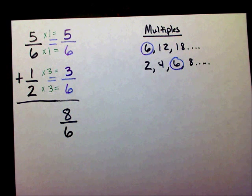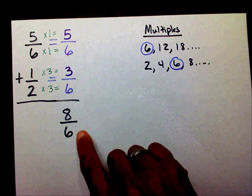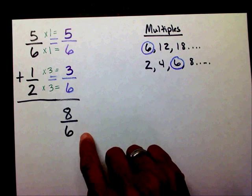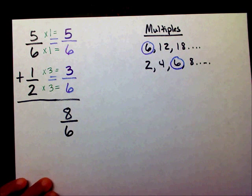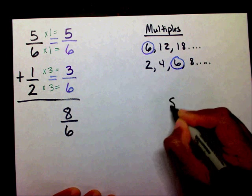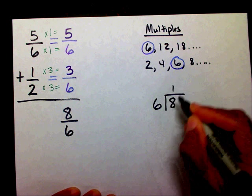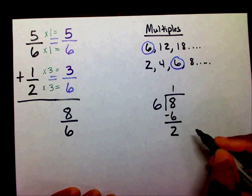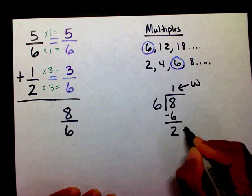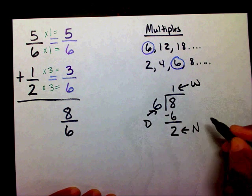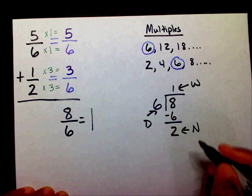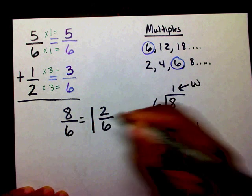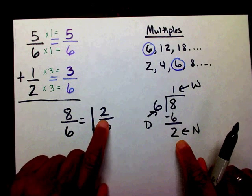Now, 8/6 is an improper fraction, so I need to change this to a mixed number — please watch my previous video on improper fractions to mixed numbers. So over here I'm going to divide 8 by 6. 6 goes into 8 one time, and I subtract with a remainder of 2. This is going to be my whole number, this is going to be my numerator, and this is going to be my denominator. So instead of writing 8/6, I can change that into a mixed number of 1 and 2/6.